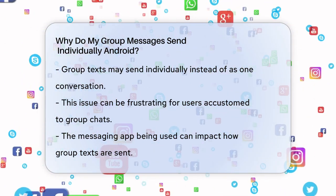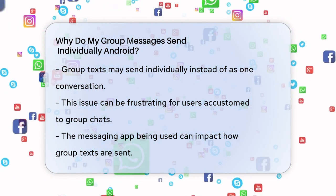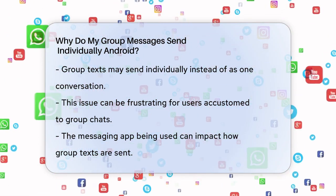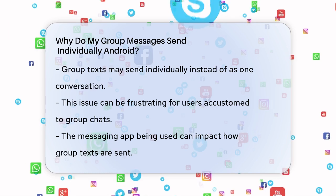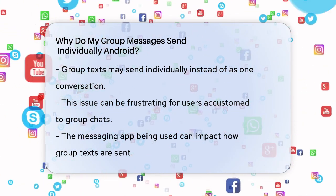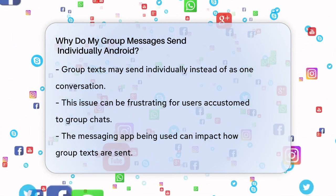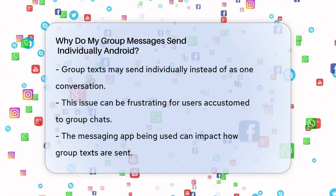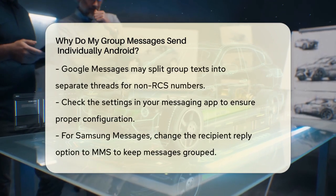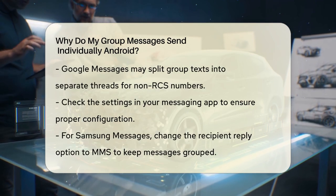One of the main reasons this might happen is due to the messaging app you're using. For instance, if you're using Google Messages, you might encounter issues where group texts are split into separate threads or sent as individual messages. This can occur because Google Messages sometimes separates messages from non-RCS (rich communication services) numbers and images into different chats.